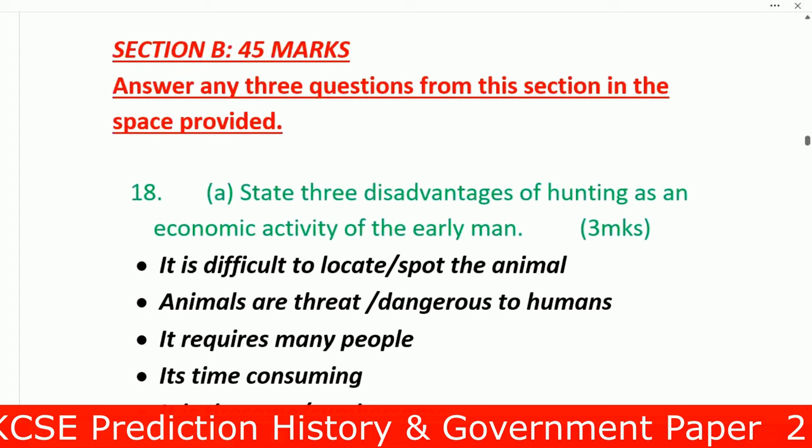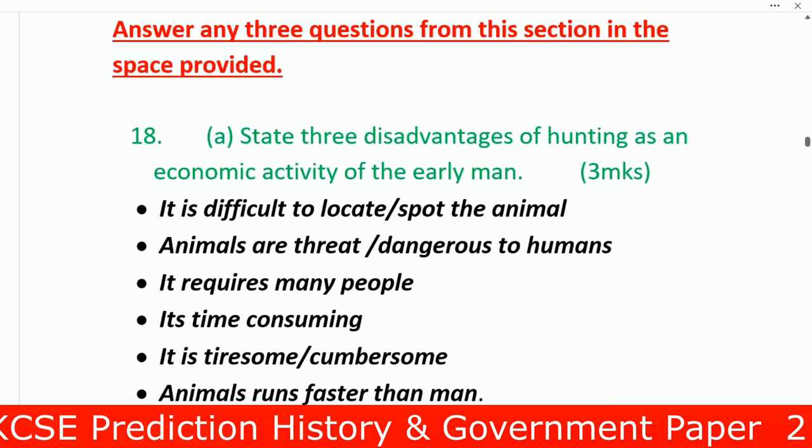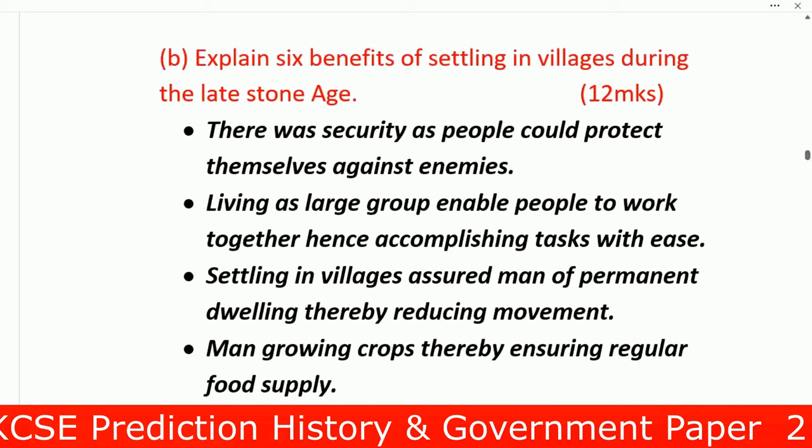Now we go to Section B, where you answer any three questions out of 45 marks — each question has 15 marks. Question 18: State three disadvantages of hunting as an economic activity for early man. Number one: it was difficult to locate or spot animals. Number two: animals are a threat and dangerous to humans. Number three: it requires many people. Number four: it is time-consuming. Number five: it is tiresome. Number six: animals run faster than man.